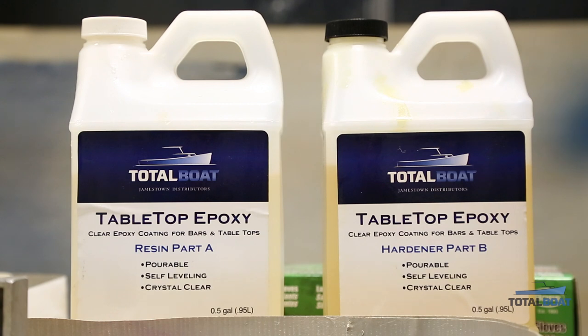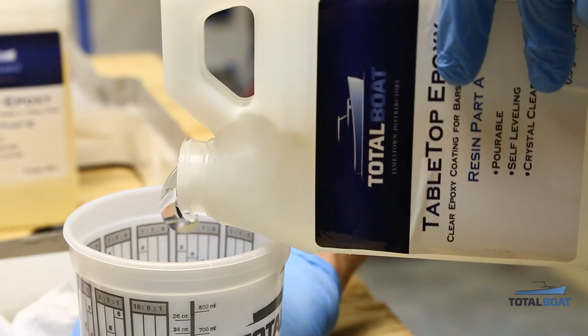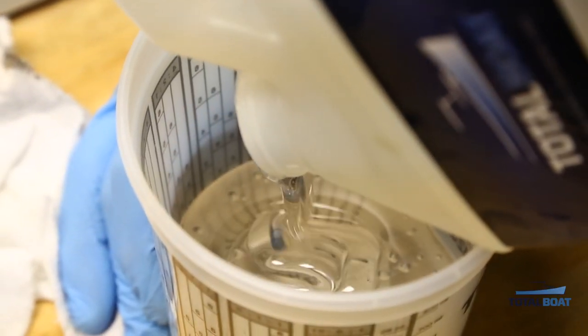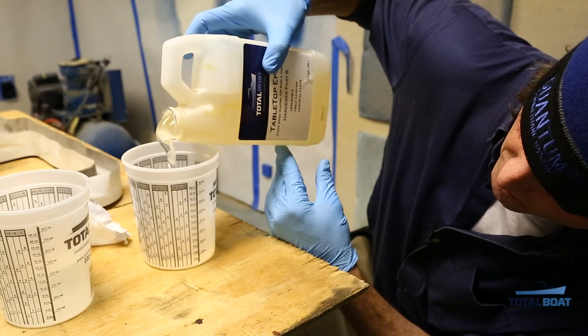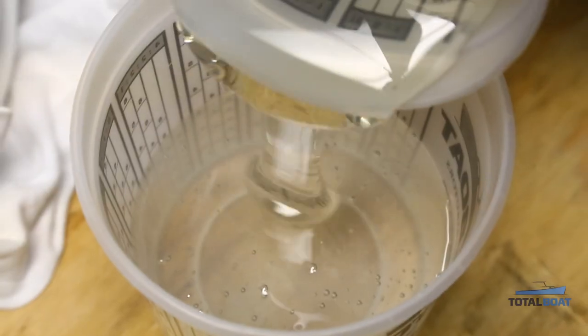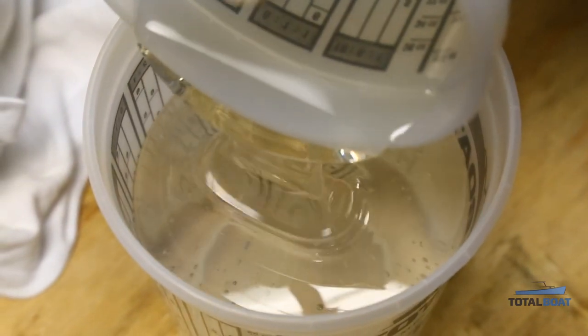The next step is to mix the tabletop epoxy, one part resin to one part hardener. Working temperature should be between 60 and 80 degrees. At 70 degrees, working time will be about 20 minutes with a cure time of 16 to 20 hours. One mixed gallon covers about 10 square feet of surface at 1/8 of an inch.